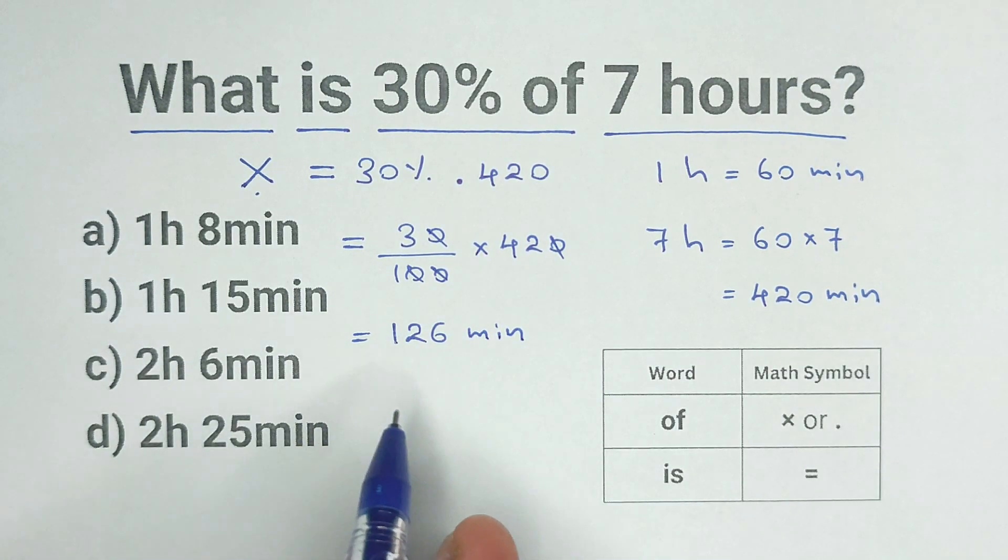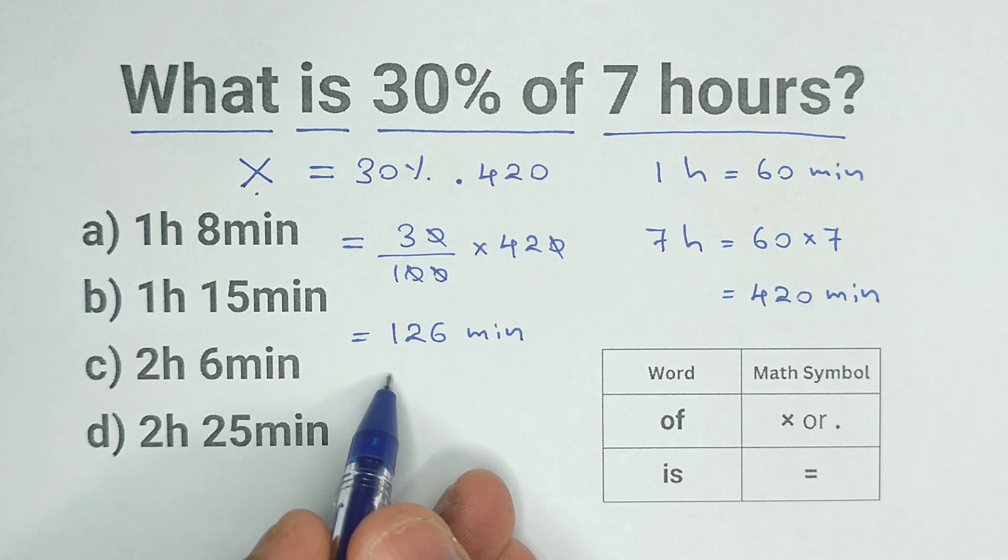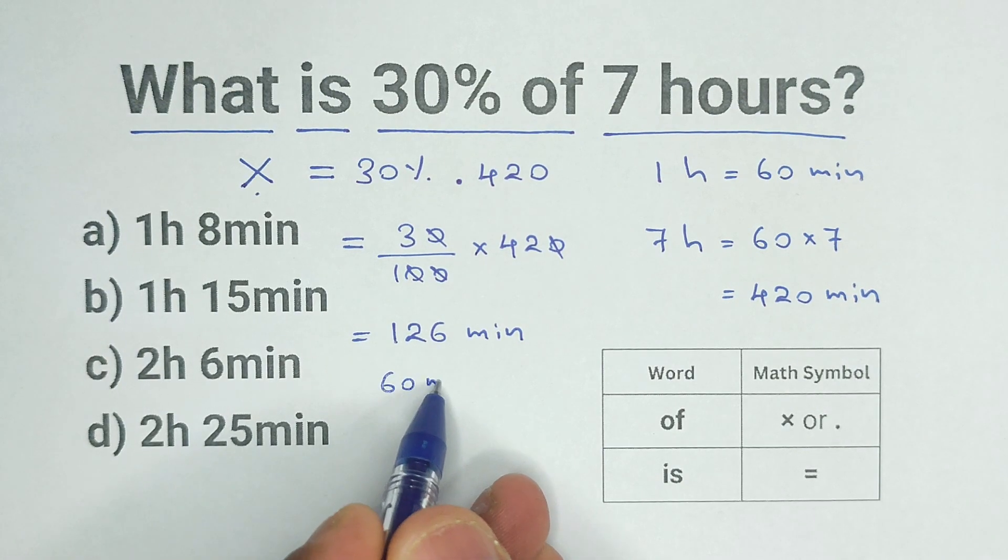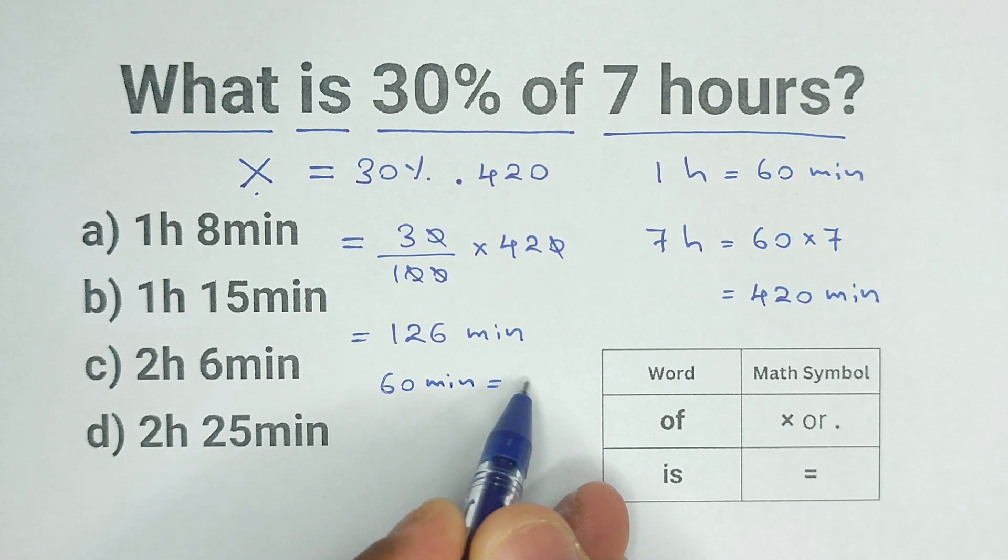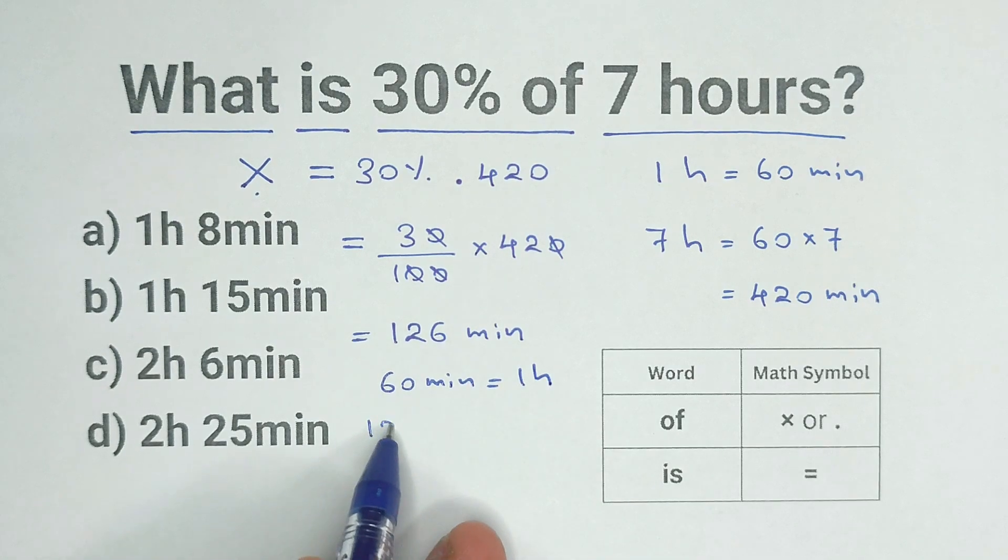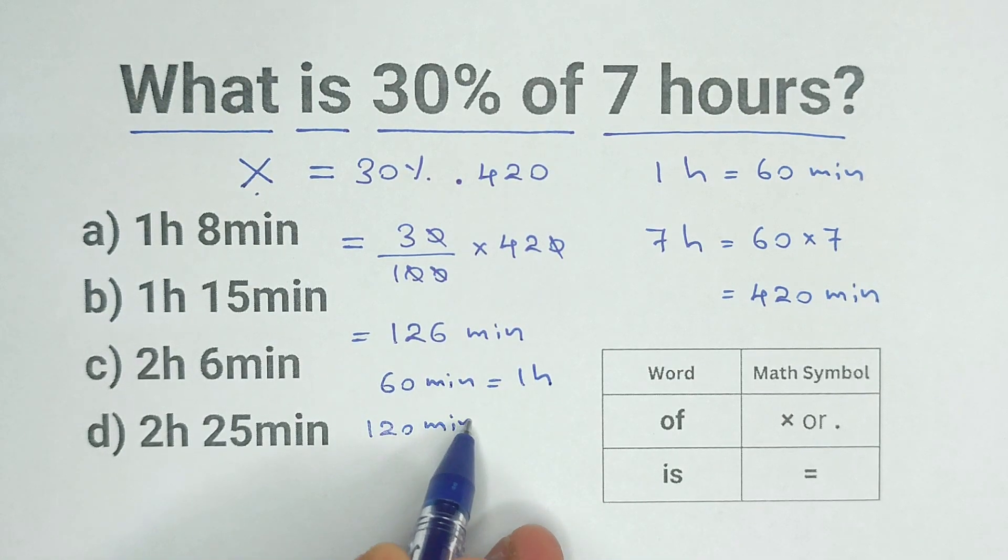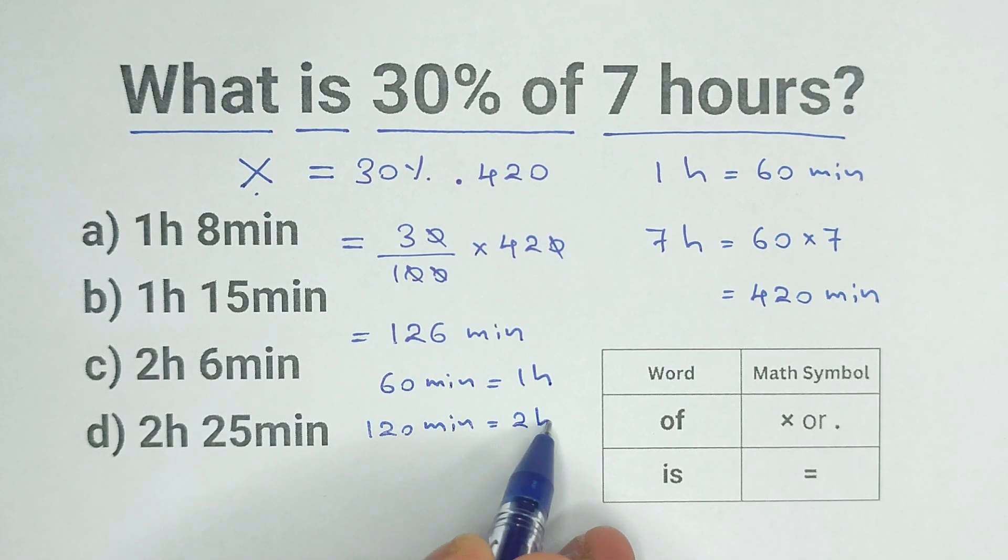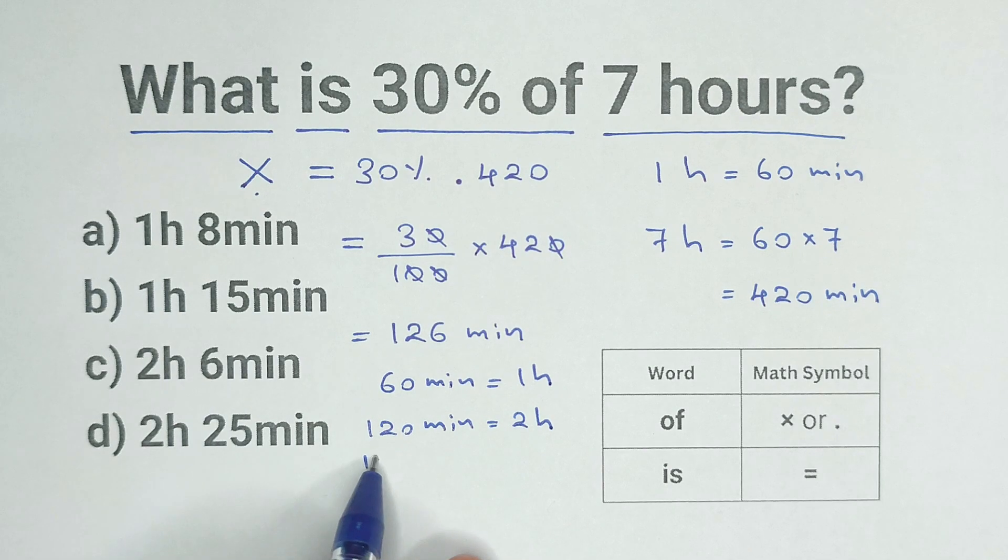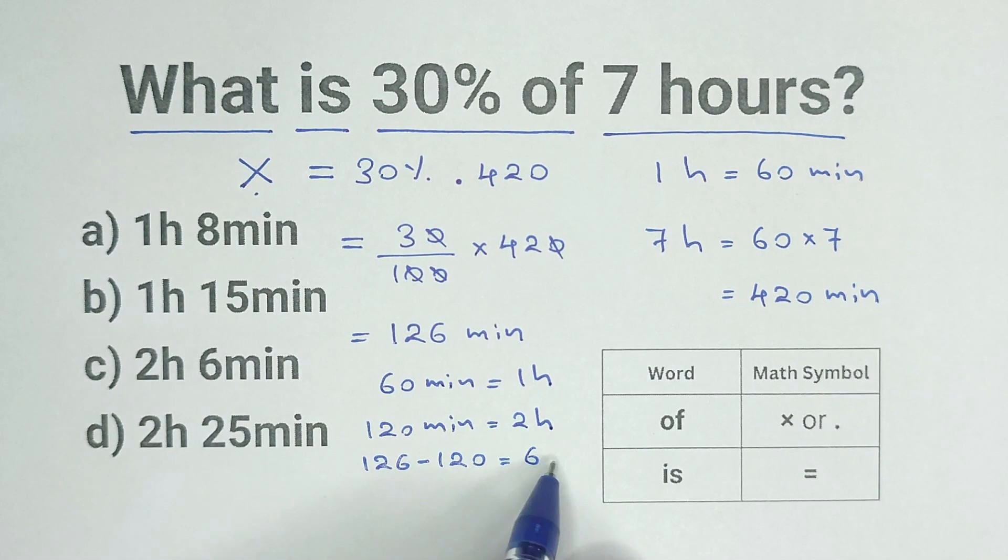Now we have to convert this into hours and minutes. We know 60 minutes is an hour. So 120 minutes is 2 hours. And the remaining is 126 minus 120, which equals 6 minutes.